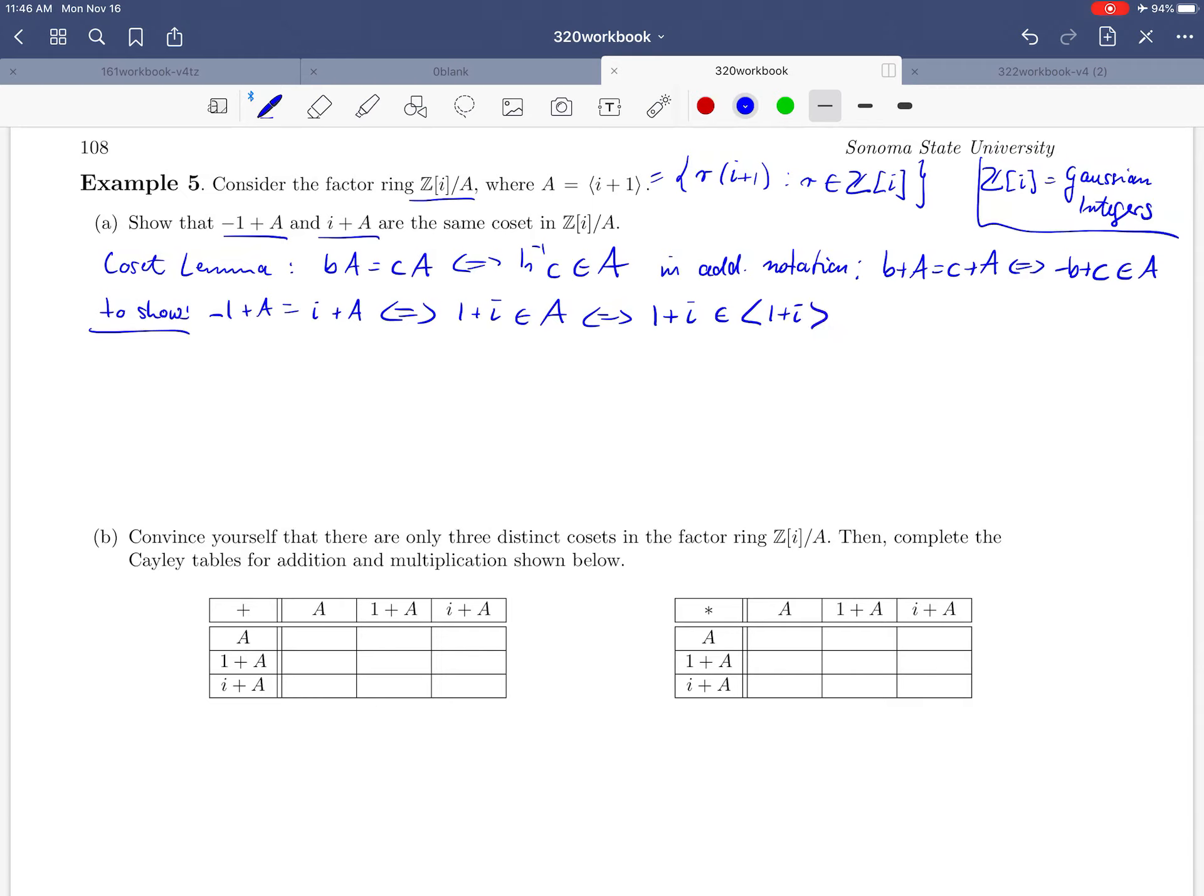So what does this mean? We can consider i and minus 1 to be the same in this factoring. In other words, when we are working with cosets, we can regard i as being the same as minus 1 in this factoring.